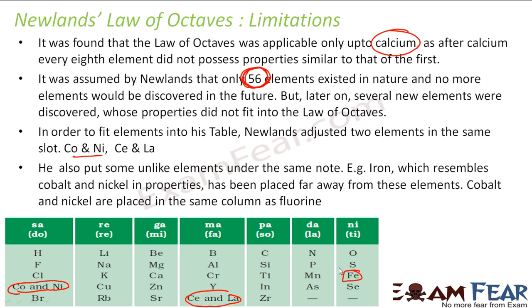Iron resembles the properties of cobalt and nickel, but they are placed far apart in his table. Also, cobalt and nickel were grouped with chlorine, yet cobalt and nickel are metals while chlorine is a non-metal — they share no common properties. Despite its limitations, Newlands' work showed that the periodicity of element properties does exist.